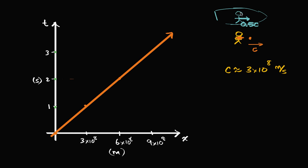My friend is stationary in that spaceship. The spaceship is moving at this constant velocity — 0.5c in the positive x direction. So they are also in an inertial frame of reference, because it's at a constant velocity relative to me. So let's plot her position on my little diagram. At time equals zero, she's exactly where I am — at the origin of my frame of reference, her x position is zero.